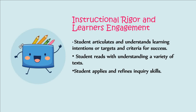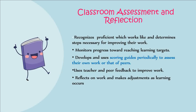Instructional Rigor and Learner Engagement: Students articulate and understand learning intentions or targets and criteria for success. Students read with understanding a variety of texts and apply and refine inquiry skills. Classroom Assessment and Reflection: Students recognize what proficient work looks like and determine steps necessary for improving their work. They monitor progress toward reaching learning targets, develop and use scoring guides periodically to assess their own work or that of peers, use teacher and peer feedback to improve work, and reflect on work and make adjustments as learning occurs.